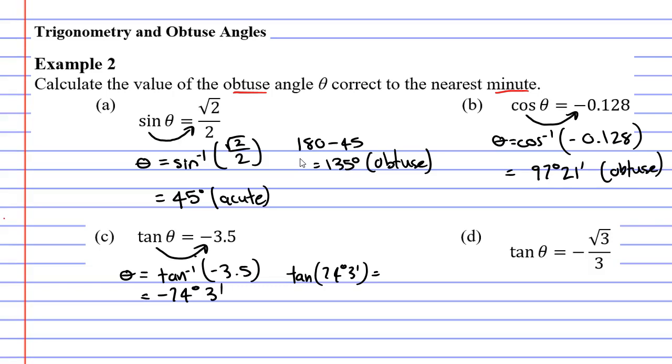Well, in the previous example, with a negative angle, we got a solution of negative 3.5. So if the angle was positive, we should have got positive 3.5. So what angle is supplementary to 74 degrees, 3 minutes?